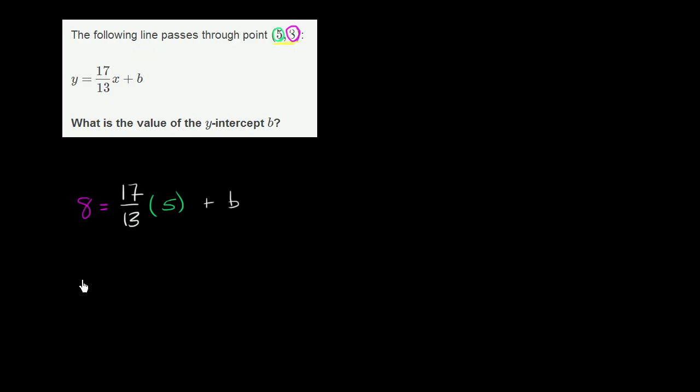So if we simplify this a little bit, we get 8 is equal to, let's see, 5 times 17 is 50 plus 35 is 85. Is 85 over 13 plus b.